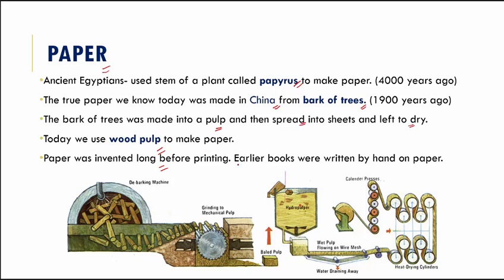Paper was invented long before printing existed, so books were written by hand on paper. Imagine a book of 50 pages — all handwritten! This explains why it was a very slow and laborious process, and why books were so rare and very few people actually had books back then. Then came the whole concept of printing.